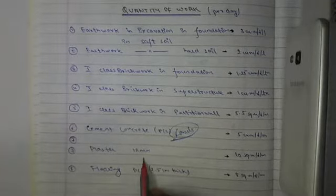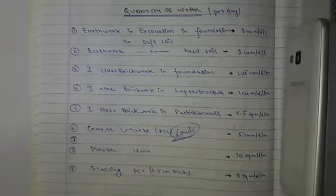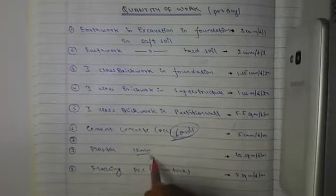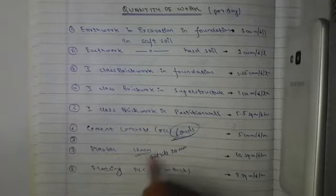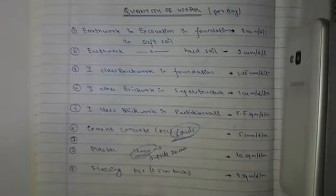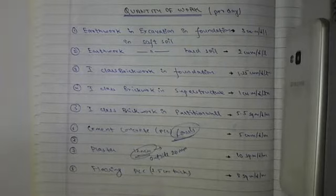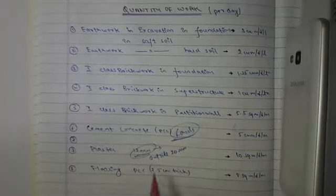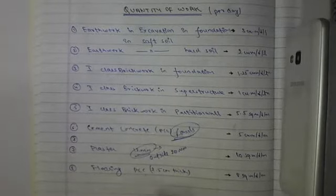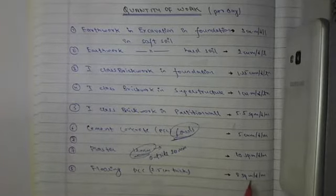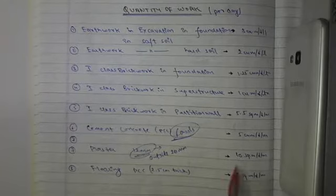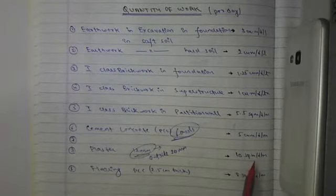For plastering of 12mm, which is inside plaster (inside plaster is 12mm and outside plaster is 20mm), where the mason works with finishing. For flooring PCC 2.5 centimeter thick: 8 square meters per day per mason. For plaster: 10 square meters per day per mason.